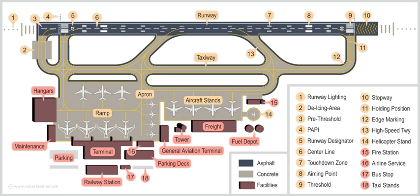Larger airports may have airport aprons, taxiway bridges, air traffic control centers, passenger facilities such as restaurants and lounges, and emergency services. In some countries, the U.S. in particular, they also typically have one or more fixed base operators, serving general aviation.